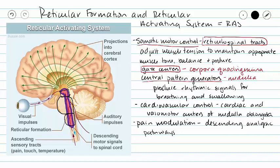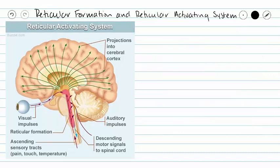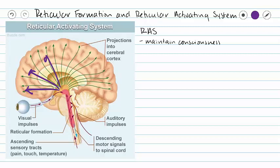Now let's talk about the reticular activating system, or RAS. The RAS works in conjunction with the mesencephalon to maintain consciousness by sending signals to the cerebrum at regular intervals — this is what keeps us awake. As you begin to get sleepy, those signals decrease in frequency, causing drowsiness.